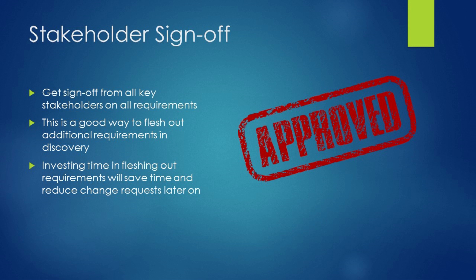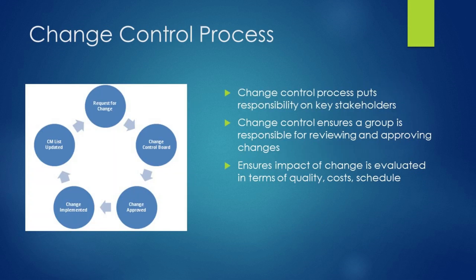An added benefit of having stakeholders sign off on the requirements is that if they come to you while the project is in the development phase and try to expand the project's scope by adding requirements, you can remind them of the document they signed off on previously, and remind them that they can't change the project's scope without impacting the timeline and the cost of the project. Number 3: The change control process. A good change control process puts the responsibility on the team leading the project to approve all changes to the initial scope of the project as a group.